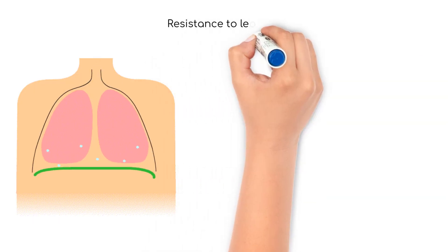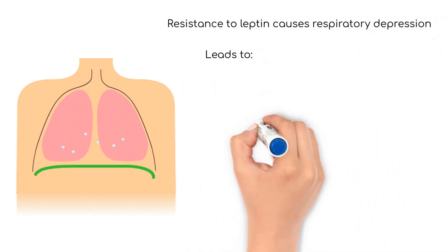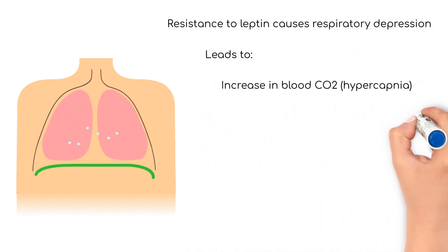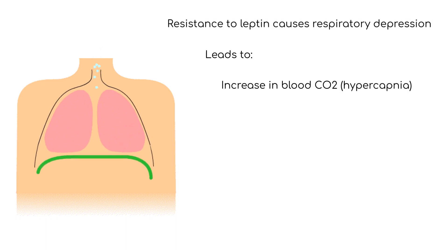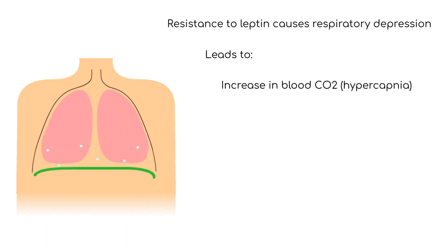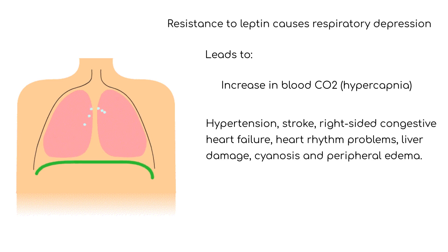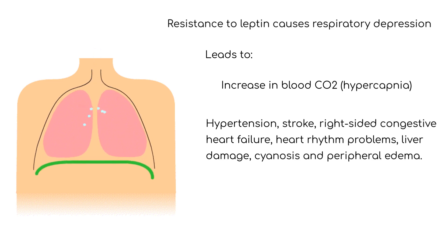Resistance to leptin results in respiratory depression and hypoventilation, which results in an increase in blood CO2, known as hypercapnia. This, along with decreased oxygen saturation, causes hypertension, stroke, right-sided congestive heart failure, heart rhythm problems, liver damage, cyanosis, and peripheral edema.